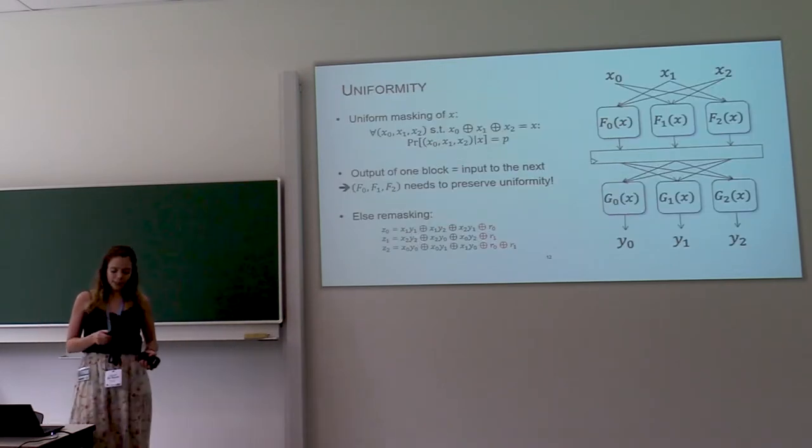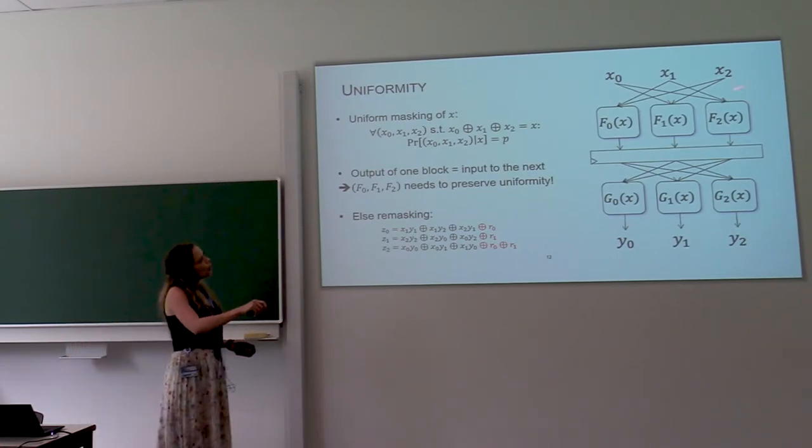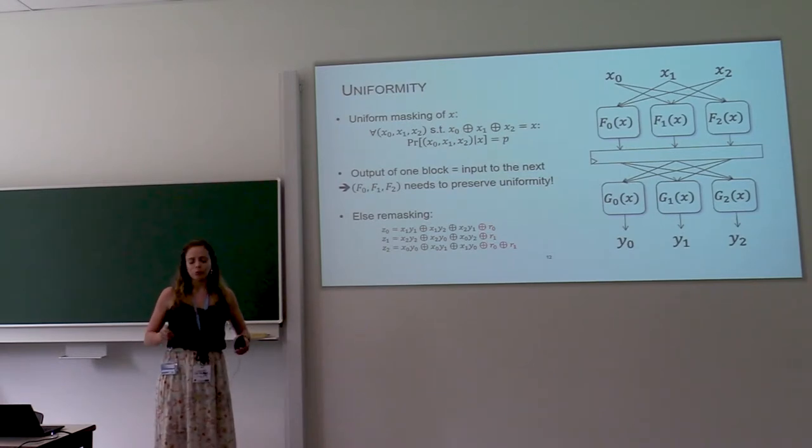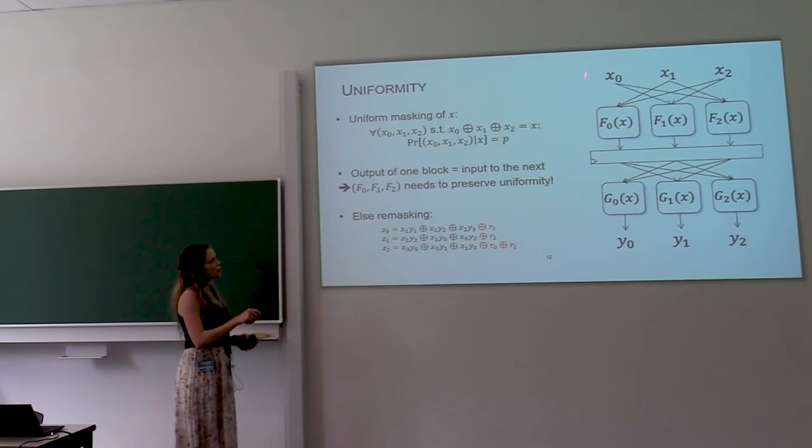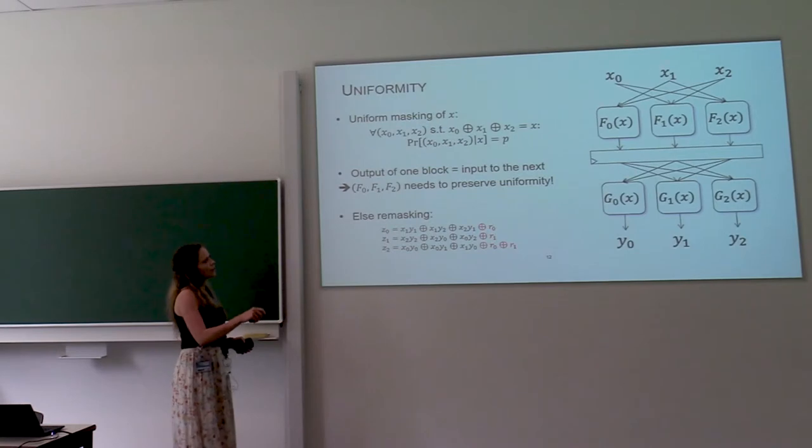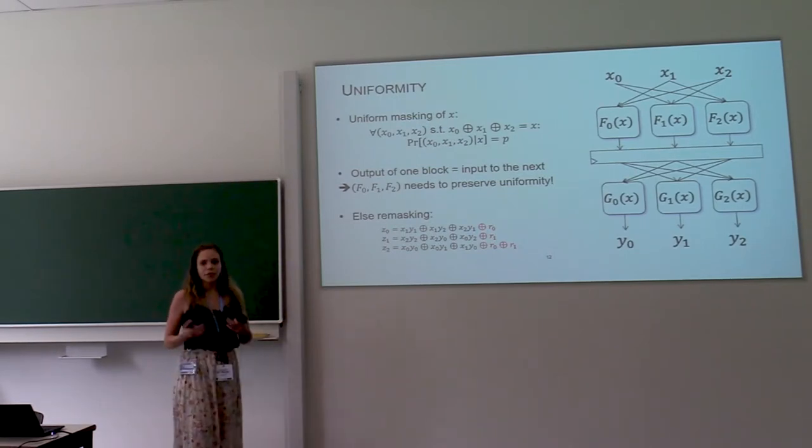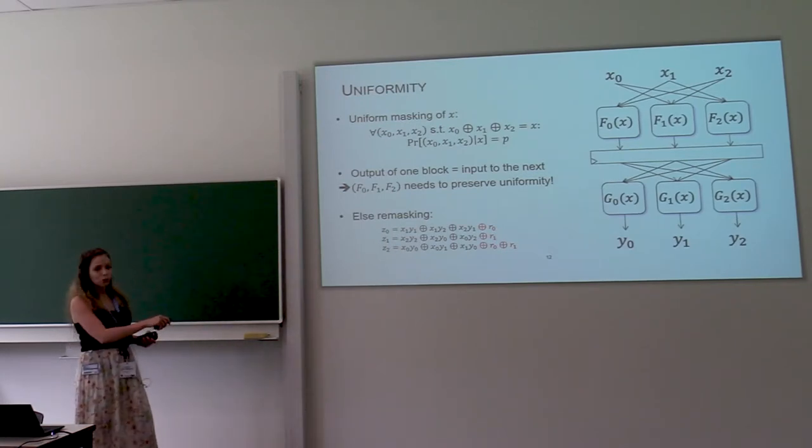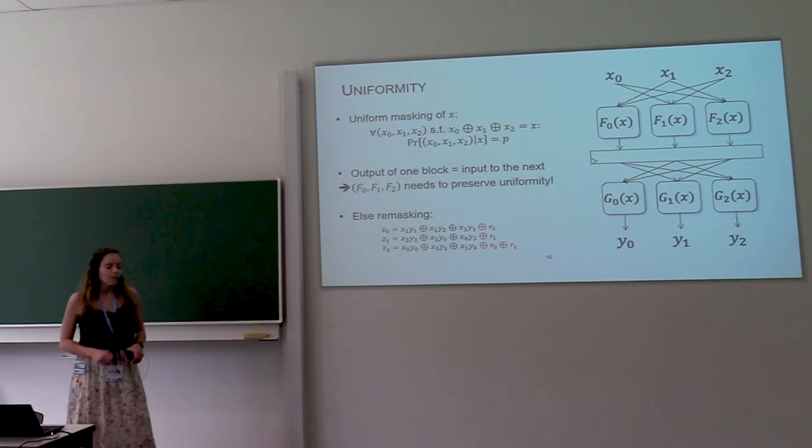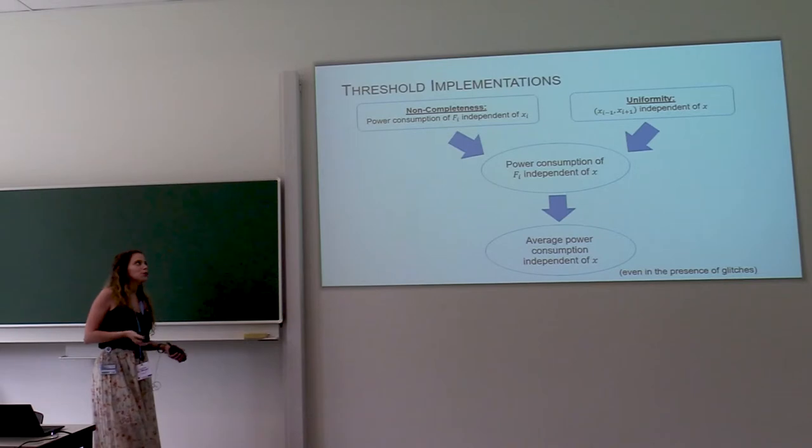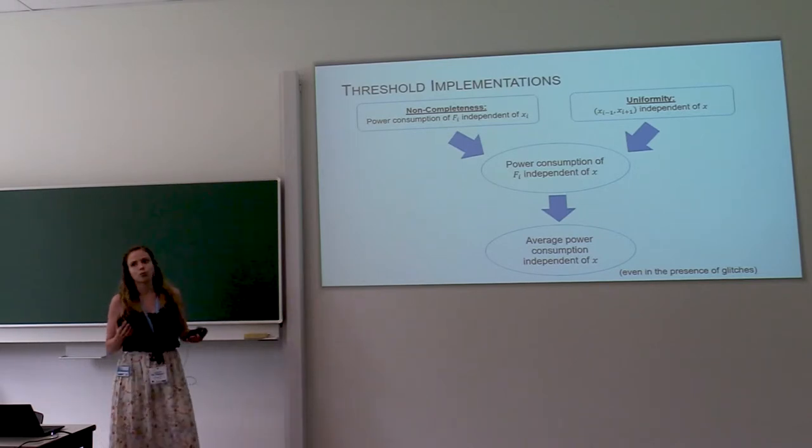Then the final principle is uniformity. Uniformity means that all the possible ways to share variable x are equiprobable. So they occur with the same probability. And since threshold implementations assume that this is the case at the input of every block, it's important that your masked blocks also preserve this property. So in most cases, in the case of this multiplier we were using, this was not the case. But we often solve this by adding some fresh randomness.